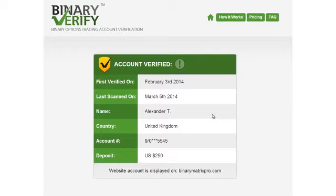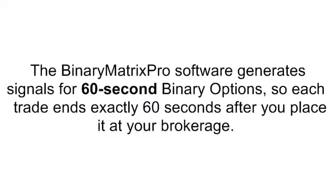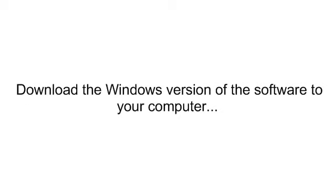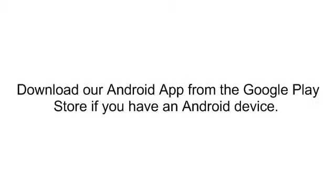Time to look at Binary Matrix Pro itself. The Binary Matrix Pro software generates signals for 60-second binary options, so each trade ends exactly 60 seconds after you place it at your brokerage. There are three ways you can receive signals: one, download the Windows version of the software to your computer; two, access the web-based version from any device with a modern web browser; and three, download our Android app from the Google Play Store if you have an Android device.